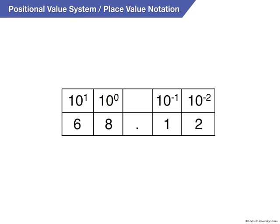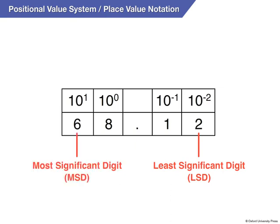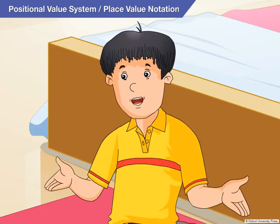The rightmost digit, i.e. 2, has the least positional value or weight. Exactly. So 2 is called the least significant digit or LSD. Whereas the leftmost digit, i.e. 6, has the maximum positional value or weight. So it is called the most significant digit or MSD.